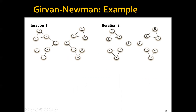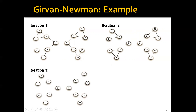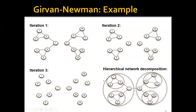In the second iteration, we recompute the edge betweenness in both subgraphs, then remove the edges with the highest betweenness. After this, we can see that many edges have already been removed. In the third iteration, since the betweenness of all remaining edges is the same, we remove all of them. This gives us a hierarchical network decomposition, as shown.